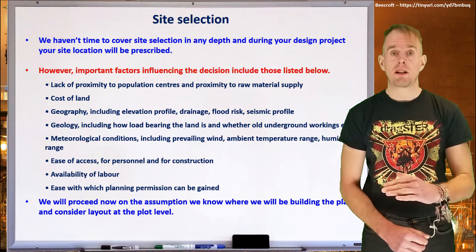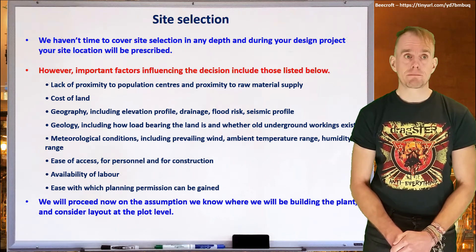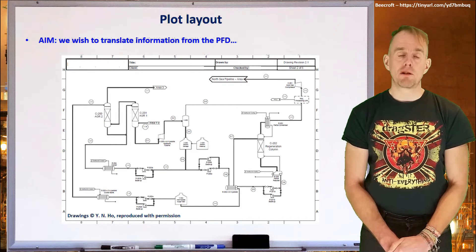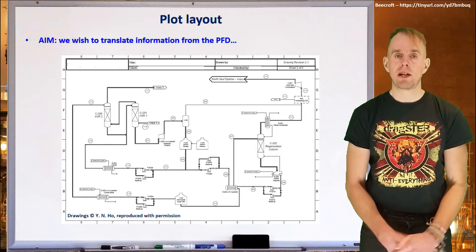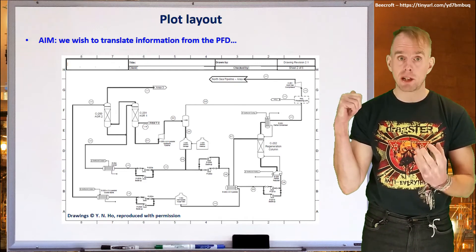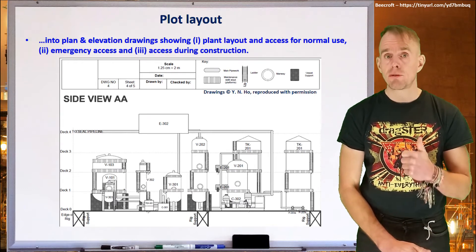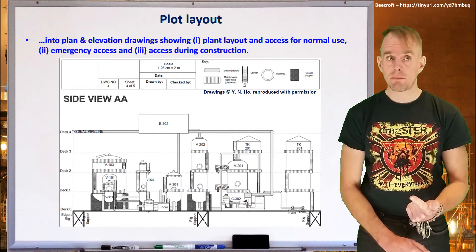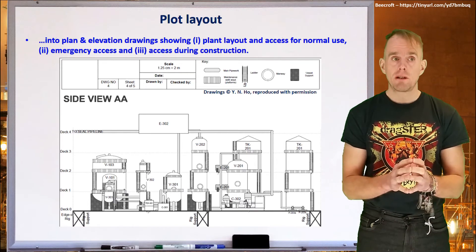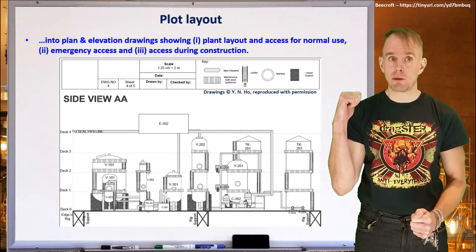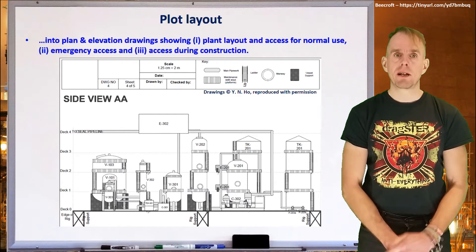We're going to assume we know where we're going to build the site, as will be the case in your design project, and now consider layout at the plot level. The plot is that part of the site where you build your plant — the parcel of land within a chemical site where you lay out the mechanical embodiment of your process flow diagram. In effect, you're converting your PFD into a set of drawings illustrating three scenarios: the plant layout and access for normal use, for emergency access, and for access during construction. This graphical information will be communicated in side views and plan views.